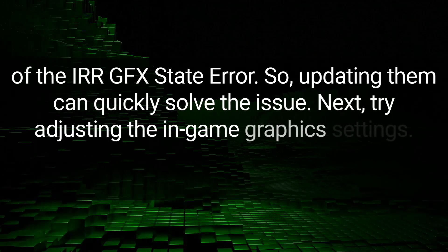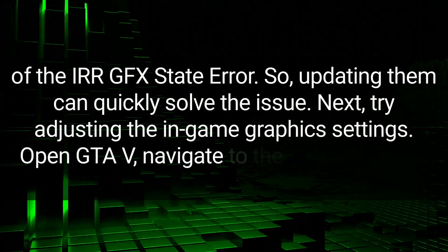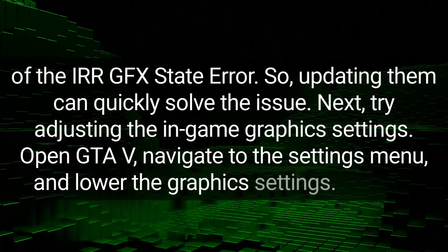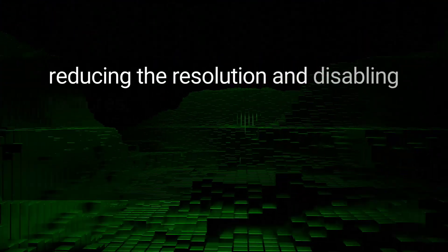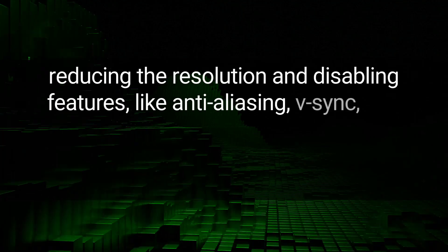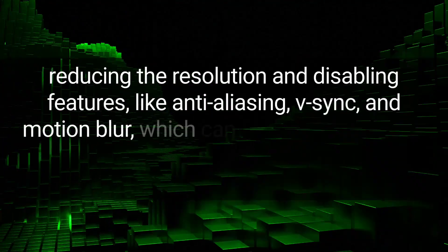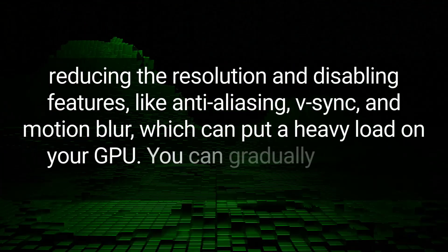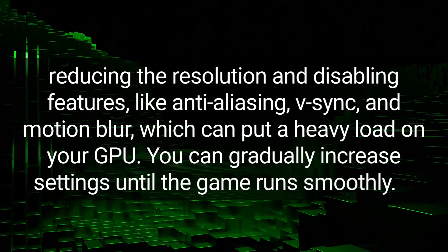Next, try adjusting the in-game graphics settings. Open GTA 5, navigate to the settings menu, and lower the graphics settings. Start by reducing the resolution and disabling features like anti-aliasing, v-sync, and motion blur, which can put a heavy load on your GPU. You can gradually increase settings until the game runs smoothly.